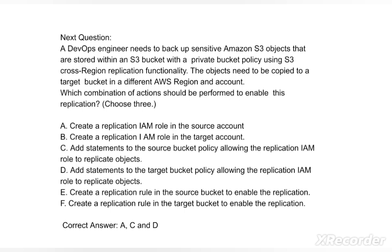Option D: Add statements to the target bucket policy allowing the replication IAM role to replicate objects. Option E: Create a replication rule in the source bucket to enable the replication. Option F: Create a replication rule in the target bucket to enable the replication. The correct answer is options A, C, and D.